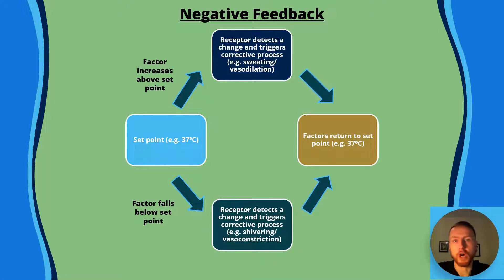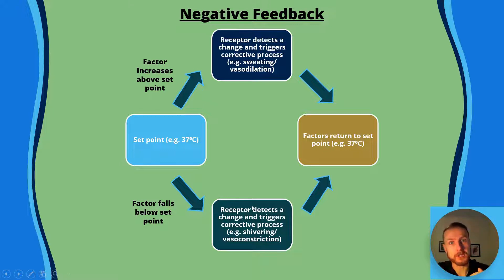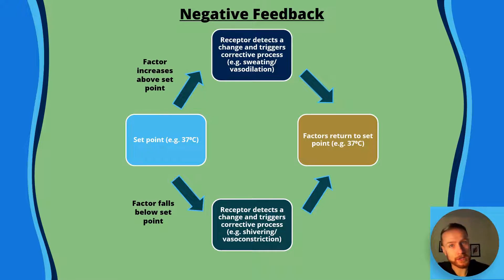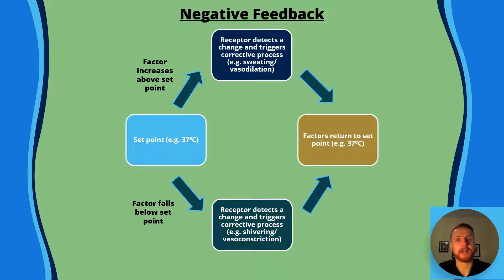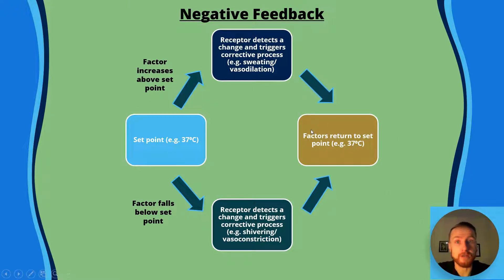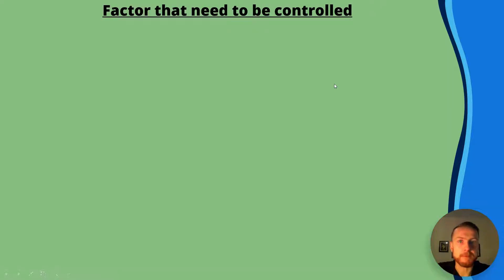If your temperature dropped below the set point, receptors are going to detect a change below the set point and trigger a sequence of responses to correct that — for example, shivering and vasoconstriction. Shivering leads to a greater rate of respiration which releases heat via the electron transport chain. Vasoconstriction means blood isn't flowing as close to the surface, so you lose heat at a lower rate. Again, once the factor returns to the set point of 37 degrees, those changes stop.